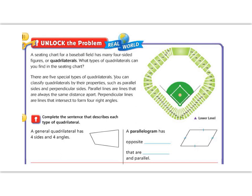Let's begin by reading the Unlock the Problem. A seating chart for a baseball field has many four-sided figures, or quadrilaterals. What types of quadrilaterals can you find in the seating chart? So we're looking over here. Well, let's look for just a second. I see that we have a square. I see we have this kind of shape back here that has four sides.